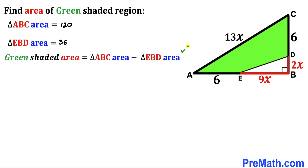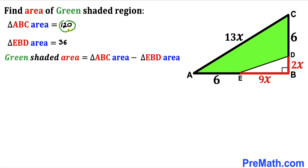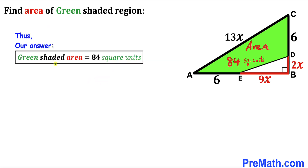For the final step, recalling that the green shaded area equals the area of triangle ABC minus the area of triangle EBD, we have 120 - 36 = 84. So the area of the green shaded region is 84 square units. Thanks for watching, and please don't forget to subscribe for more exciting videos.